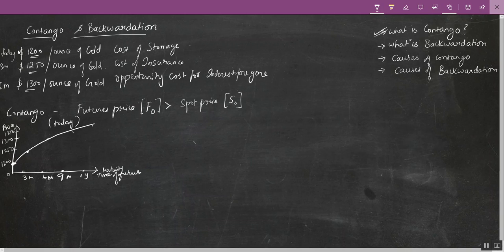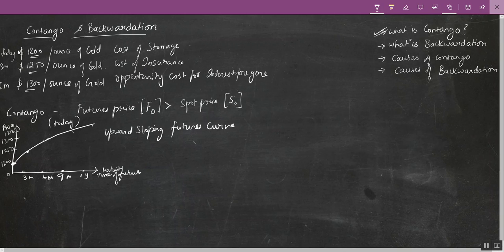Today my three-month futures will be at $1,250, my six-month futures will be $1,300, and my nine-month futures will be $1,350, and so on. This is called an upward sloping futures curve, and this situation is nothing but a contango situation — where the futures price for a commodity today is more than the current spot price in the cash market.